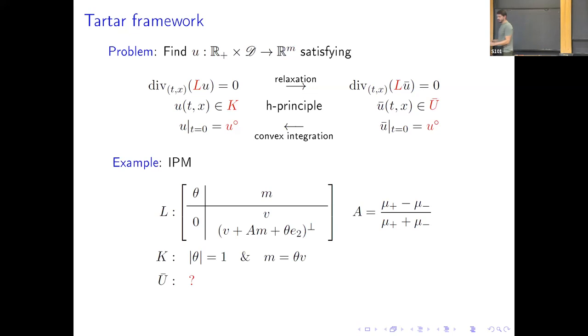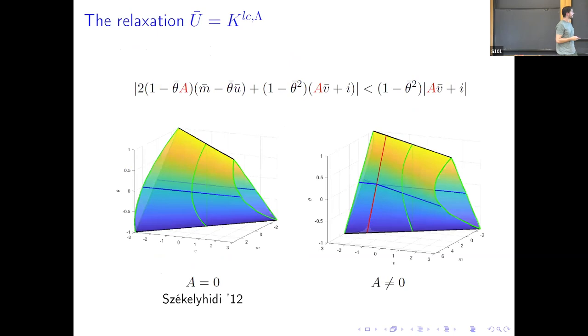For instance, we can consider the IPM equation as before. In the case where we have different densities was analyzed by Szekely-Heidi. And now we can consider another example in which we have also different viscosities. In this case, the linear operator, here we have a conservation of mass, and M is a new variable that encodes the momentum and makes the equation linear. And our constraint is this set, and we have to guess what is this set of relaxation. In this case, we obtain this expression, which agrees with a case capital E, which is a viscosity ratio.